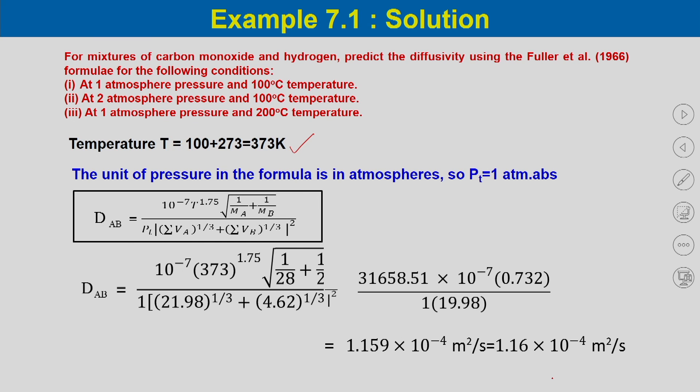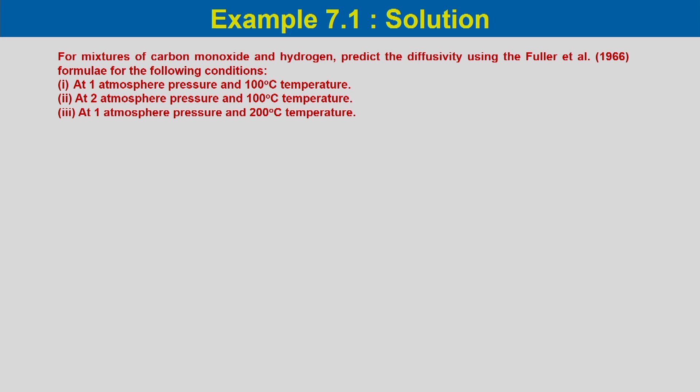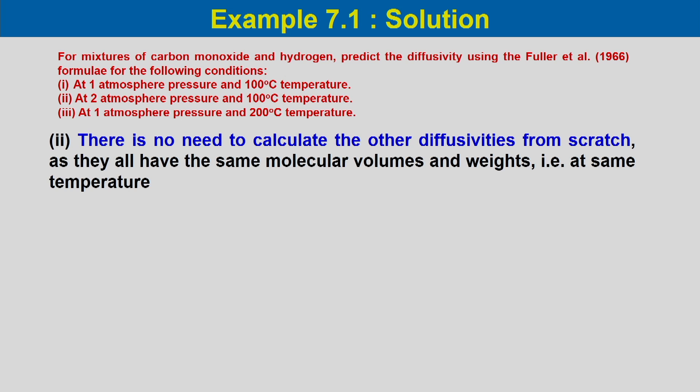The result is D_AB = 1.159 × 10^(-4) m²/s. This is the diffusivity of the gaseous component. For Problem 2, when we change the pressure from 1 atm to 2 atm keeping temperature constant at 100°C, we need not recalculate from scratch. Using the relation D_AB ∝ 1/P_T, we write D_AB2/D_AB1 = P_T1/P_T2.